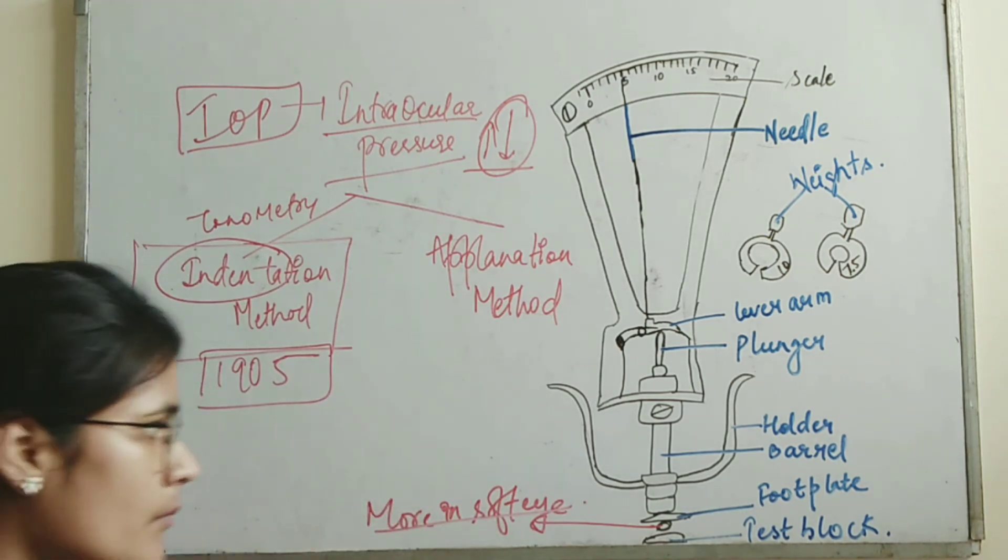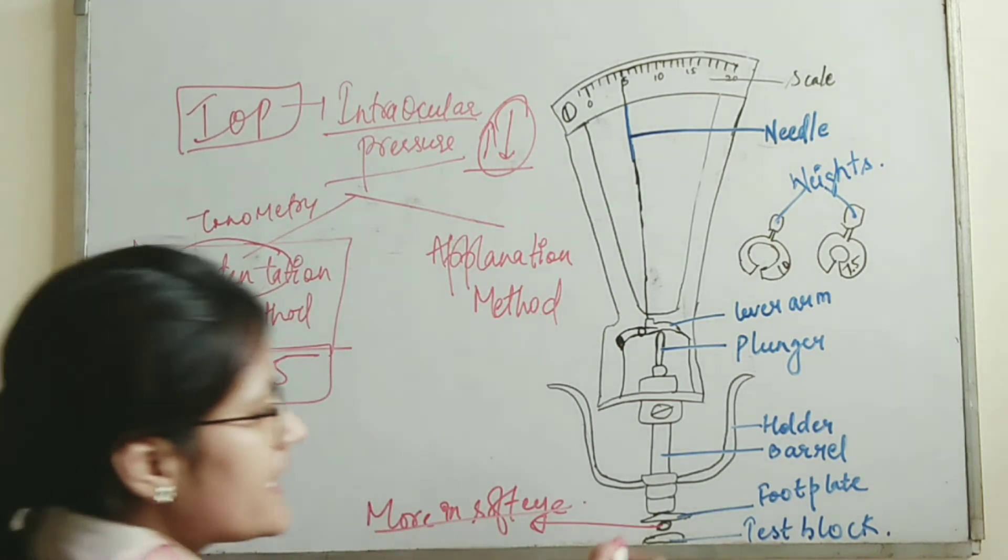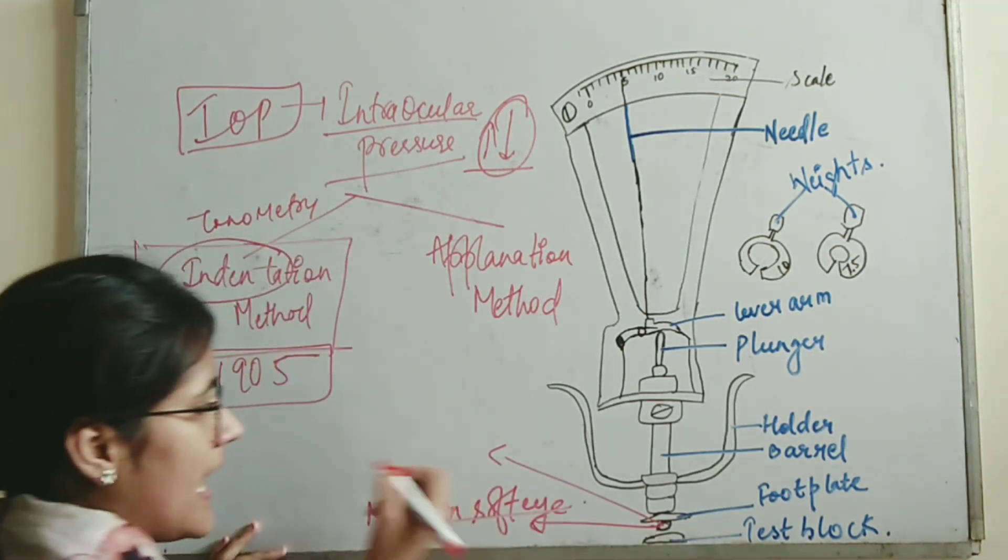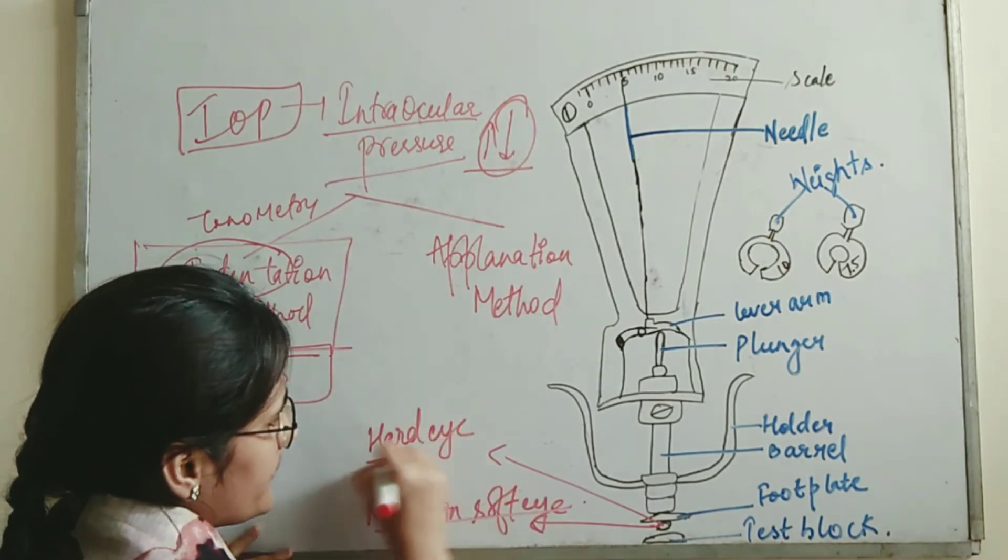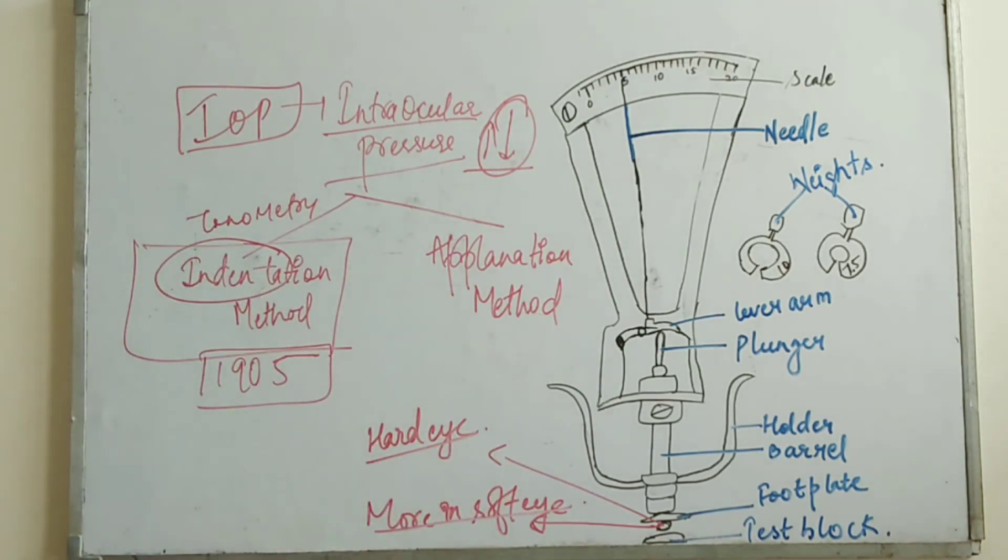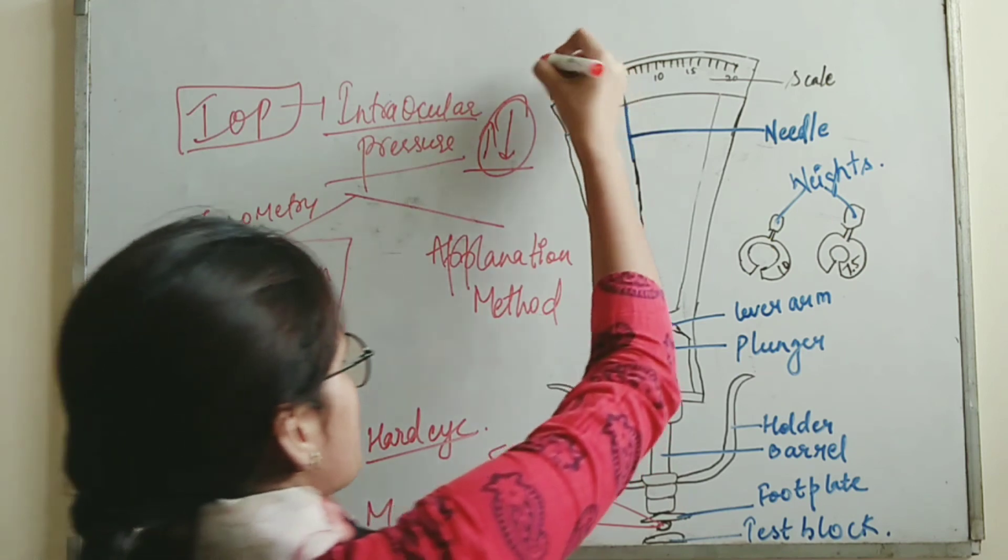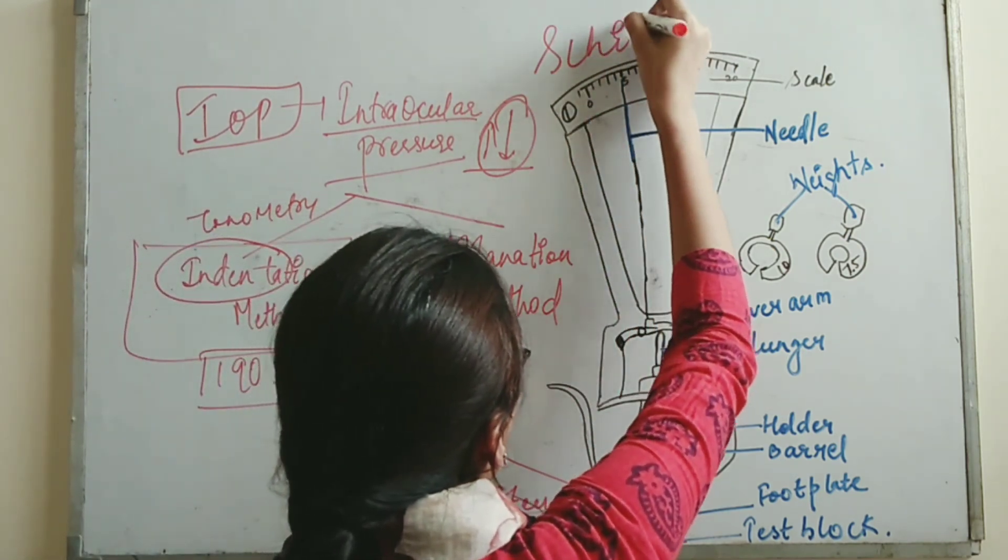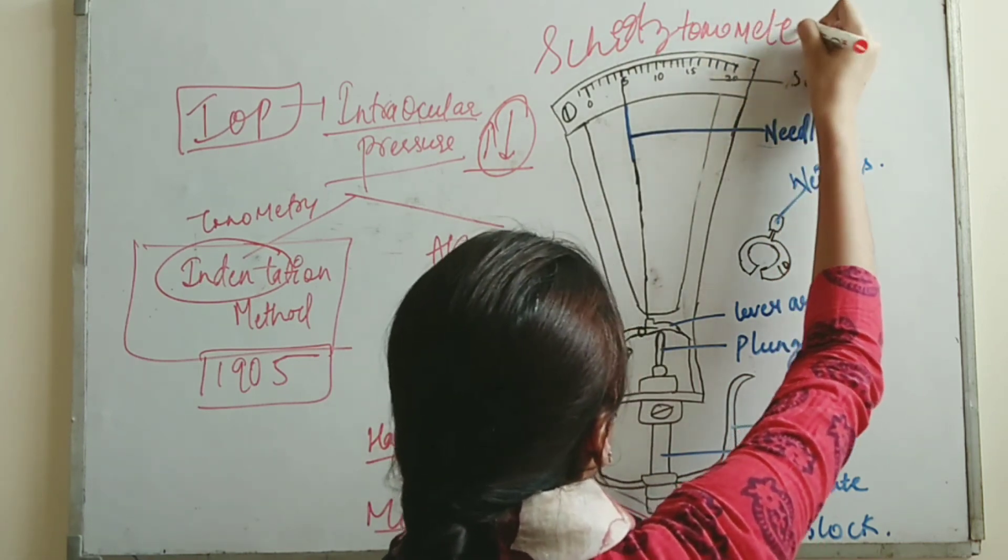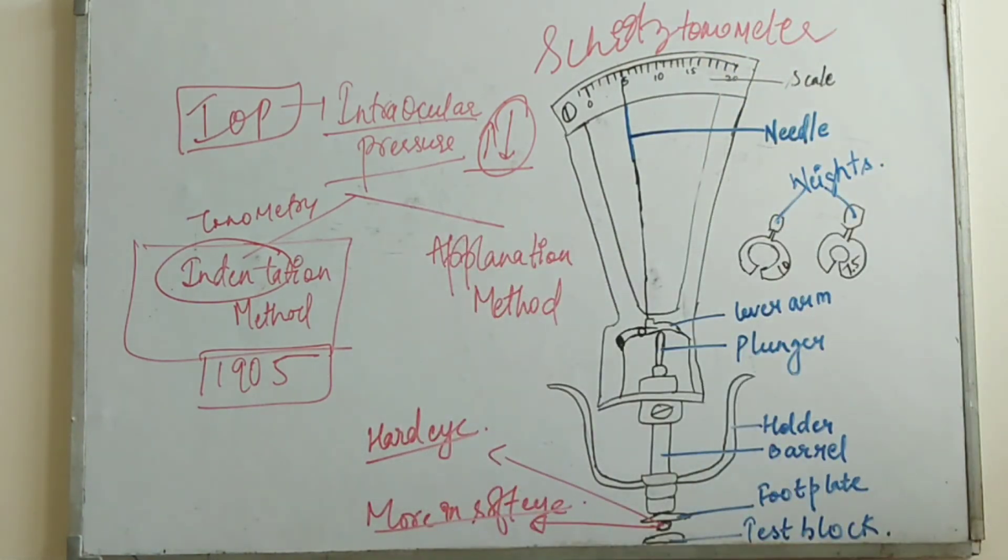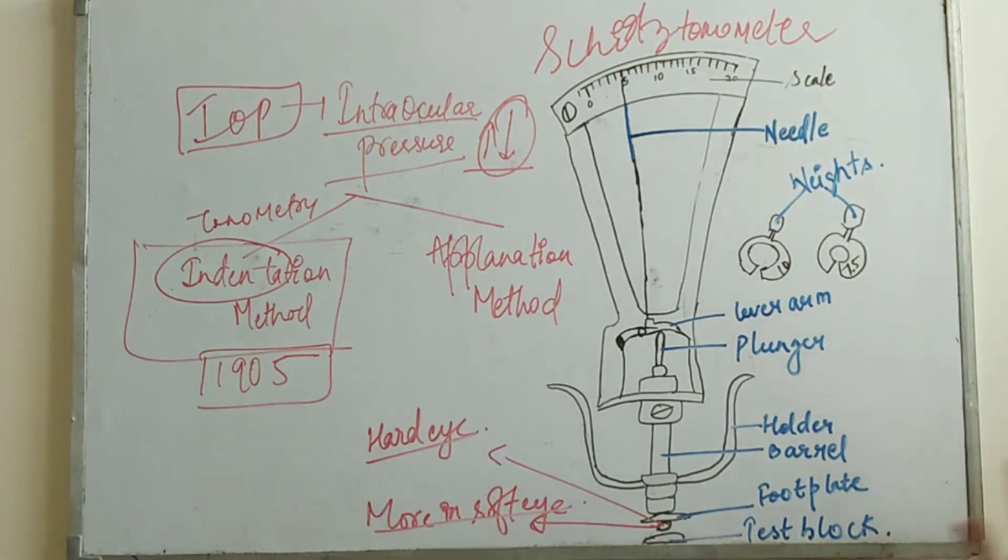The indentation method works by seeing how much the eye indents. If the pressure is normal, then it will indent more, and if the pressure is high, if it is in a hard eye, it will indent less. Now let's understand about the Schiotz tonometer. It is done by Schiotz tonometer. This is a Schiotz tonometer you are seeing here.